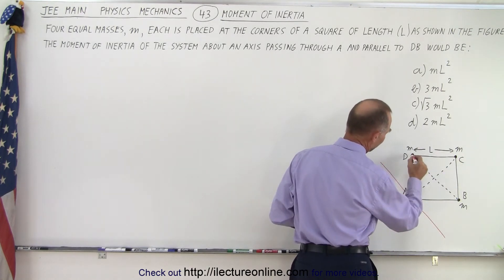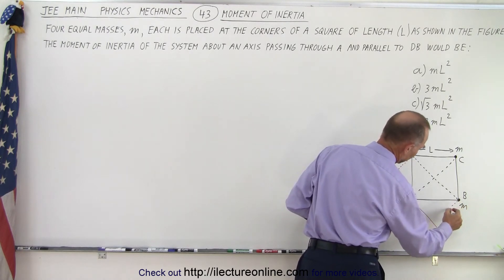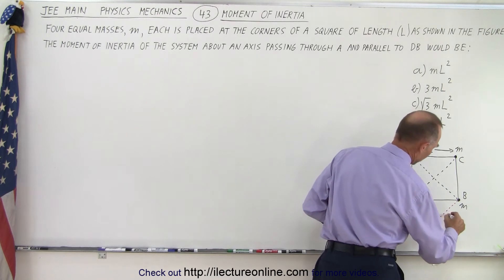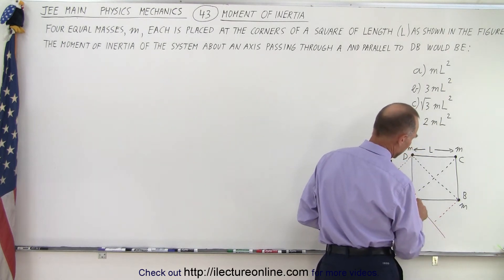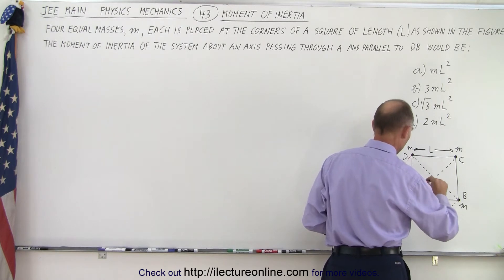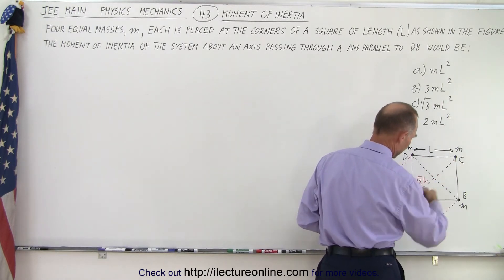And notice that the distance from D to the axis would be here, the distance from B to the axis would be here. And notice that this would be—well actually, if this is L, then this here would be the square root of 2 times L for this distance right here.